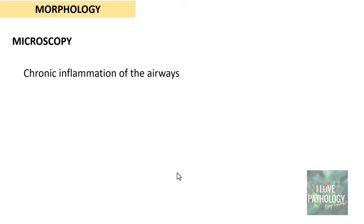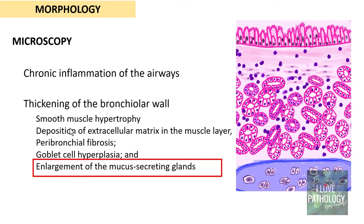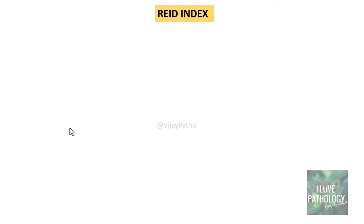Microscopically, we identify chronic inflammation of the airways and thickening of the bronchiolar and bronchial walls. The thickening can be because of smooth muscle hypertrophy, deposition of extracellular matrix in the muscle layer, peribronchial fibrosis, goblet cell hyperplasia in the epithelium, or enlargement of mucous-secreting glands. Of all these features, enlargement of mucous-secreting glands is the most predominant, which is why we need to understand the term called the Reid index.